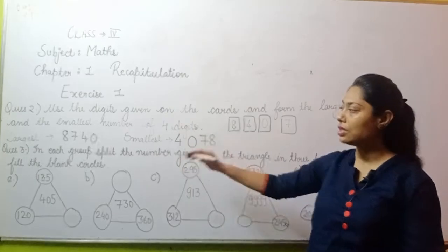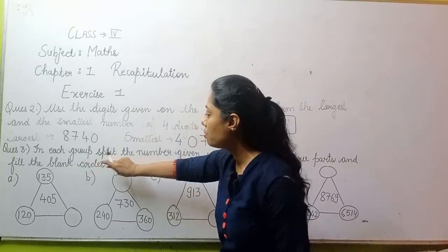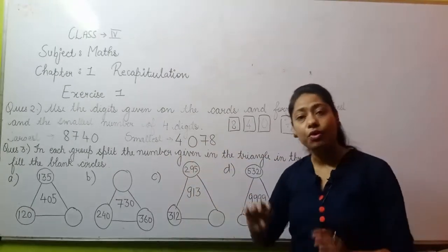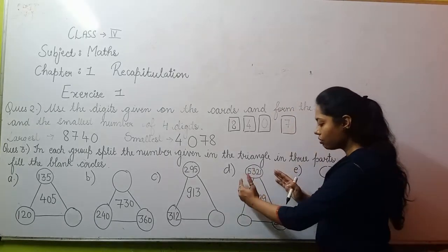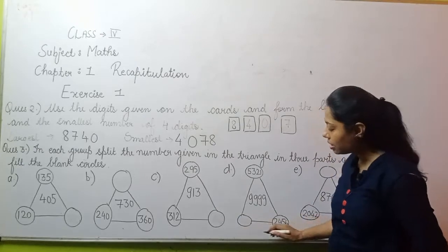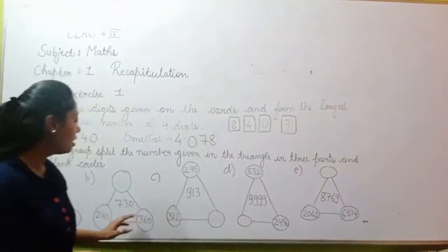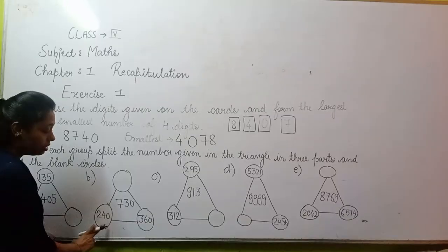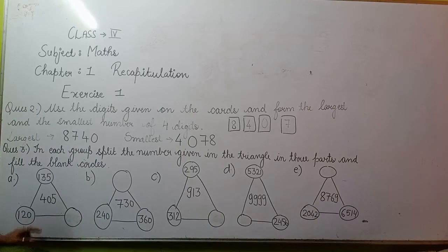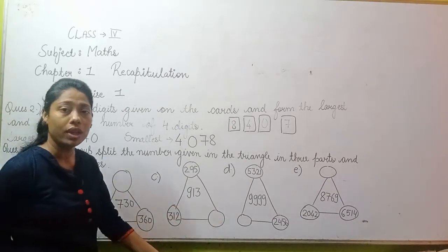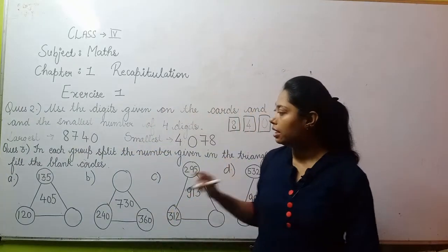Now, move to question number 3. Question number 3 says, in each group, split the number given in the triangle in 3 parts, and fill in the blank circles. What do you need to do? If you look at the question, you will see 3 circles. The circle value is missing. So this is the circle value. What do you have to do?